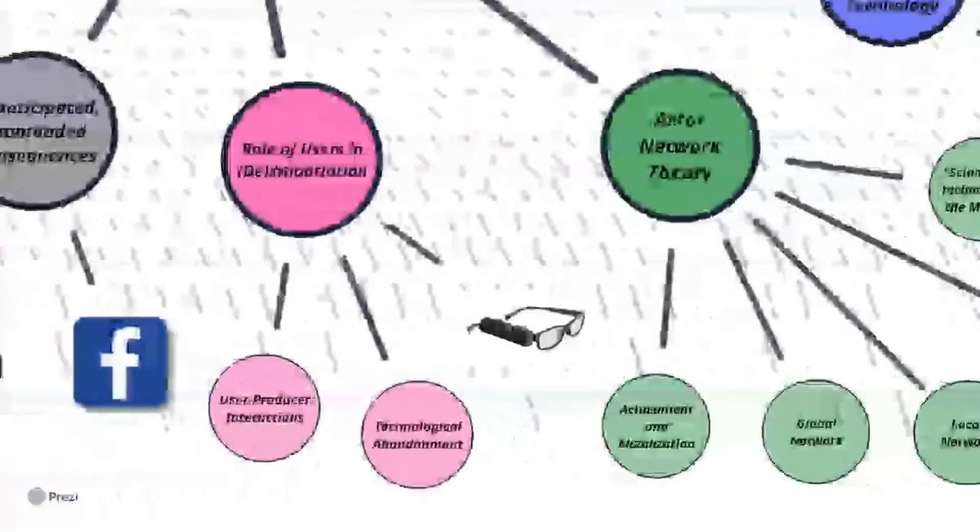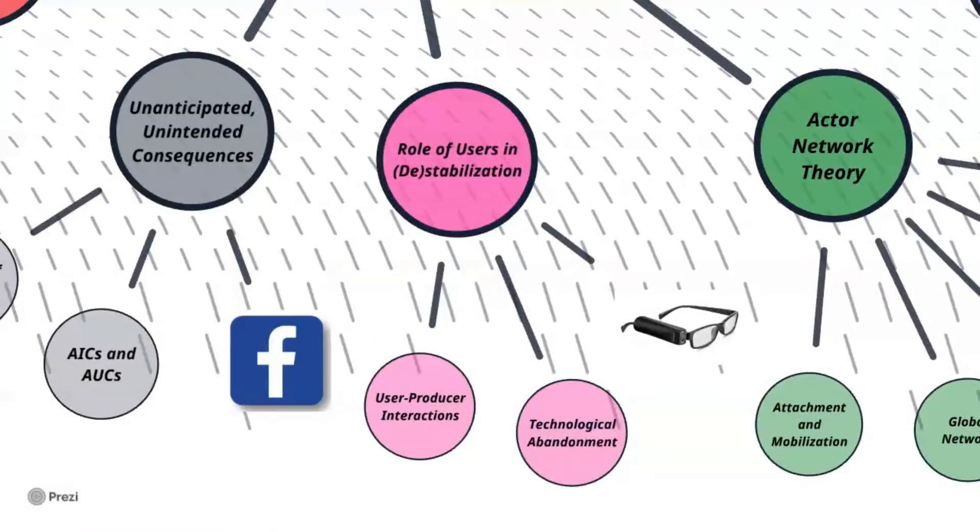Now looking at the stabilization or destabilization of technology, we can attribute some degree of a tech success with its level of user involvement throughout development. Like in the case of the OrCam, we can see that even though a technology may seem great, it can still fail if it's abandoned by its users. One of the best ways to prevent technological abandonment is by ensuring that users are involved from the beginning stages of a product's development. User-producer interactions are essential because of the importance of user participation in the innovation process, so that developers can meet the user's needs.